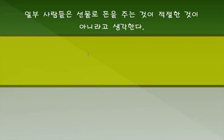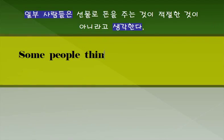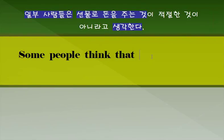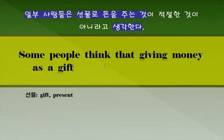일부 사람들은 선물로 돈을 주는 것이 적절한 것이 아니라고 생각한다. Some people think... 대절 주어동사를 씁니다. 돈을 주는 것, 돈을 주다: Give money → Giving money. 선물은 영어로 Gift, 혹은 Present 이런 표현을 쓸 수 있습니다. 무엇으로는 as라고 하는 표현을 씁니다. As a gift.